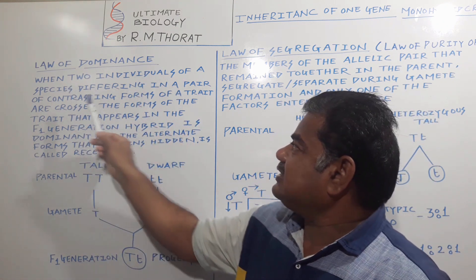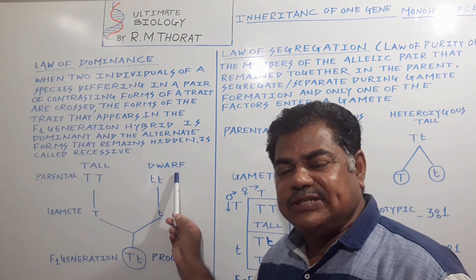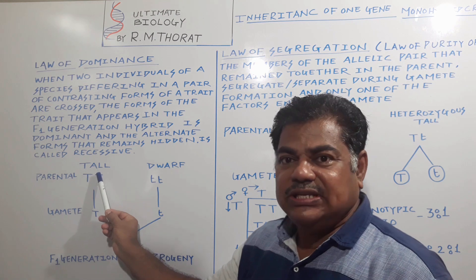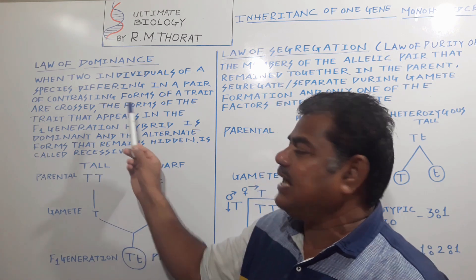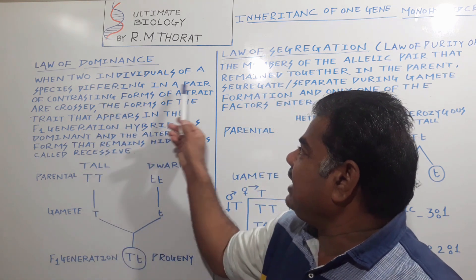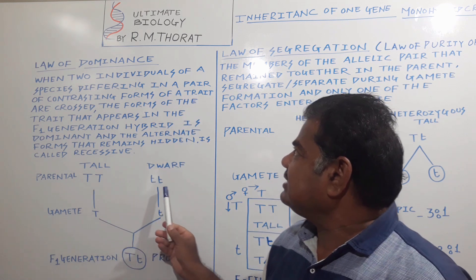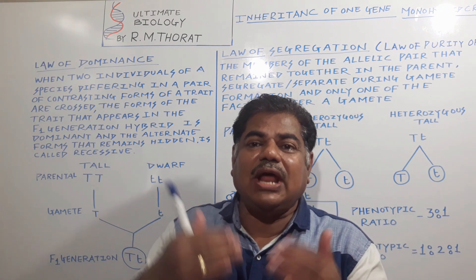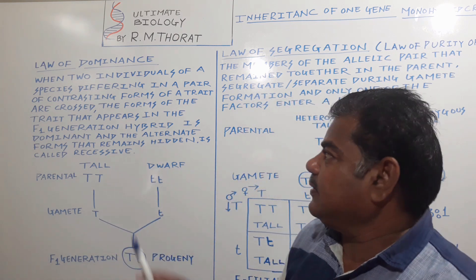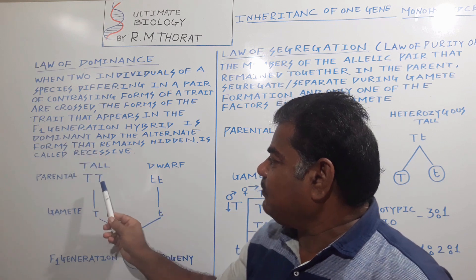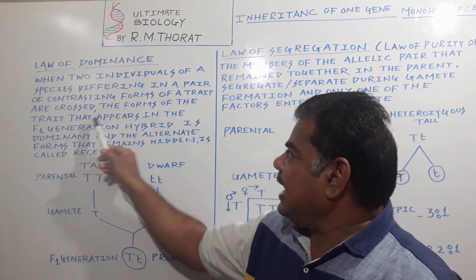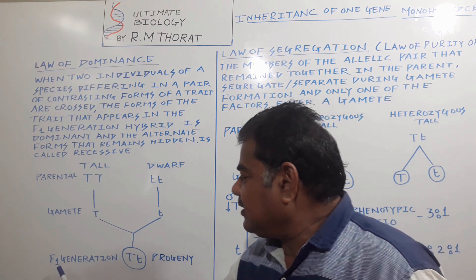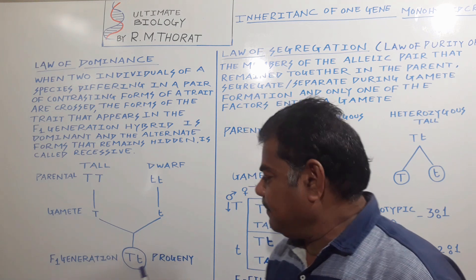When two individuals of the same species — one is tall and the second one is dwarf — one pair of contrasting characters selected by Mendel for his experiment, differing in a contrasting form, are crossed by the method of hybridization — artificial crossing — the forms of the characters tall and dwarf appear in the F1 generation, the first filial generation in the progeny.